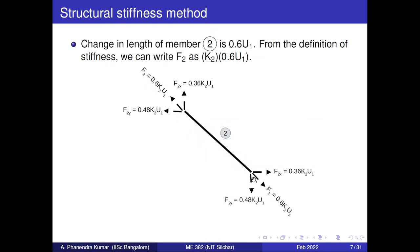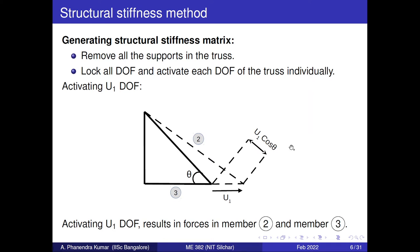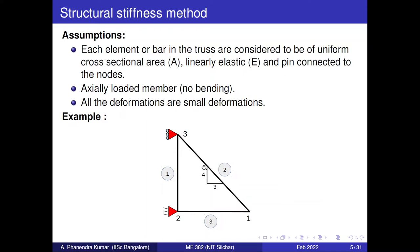We have seen that displacement is applied at node 1, causing forces to develop in members 2 and 3. Let us first find the force developed in member 2 due to displacement u1. We have seen the change in length due to u1 is u1 cos theta. From the previous example, tan theta equals 4 by 3, so cos theta equals 0.6. Therefore the total change in length of member 2 is 0.6 u1.